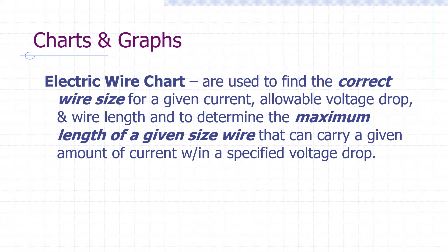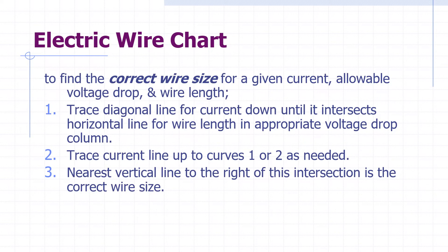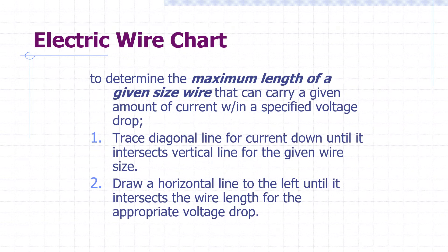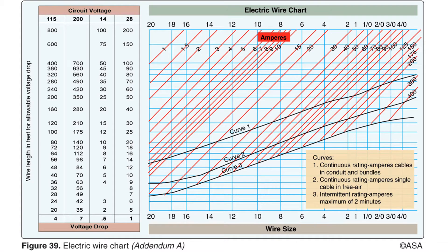Electric wire charts are used to determine the correct wire gauge for a given application or the maximum length of a particular gauge of wire in an application. This is an electric wire chart for determining the correct wire gauge for a given application or for finding the maximum allowable length of a given gauge of wire for a particular current flow.